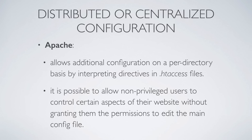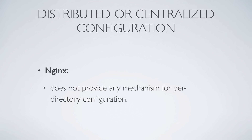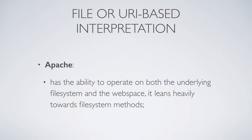The next difference is in distributed versus centralized configuration. Apache allows additional configuration on a per-directory basis — we all know the .htaccess files. This architecture lets non-privileged users control certain aspects of their website without editing the main config. Nginx doesn't provide any mechanism for per-directory configuration, but this downside pays off in increased performance: Nginx doesn't need to search for, read, and interpret .htaccess files for every request, which makes it serve requests much faster.